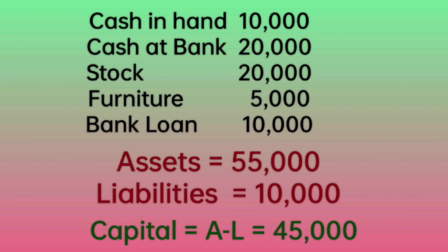Suppose, for example, the opening assets and liabilities of a firm are: cash in hand 10,000; cash at bank 20,000; stock of goods 20,000; furniture 5,000; and bank loan 10,000. The total assets are cash plus bank plus stock plus furniture — that is 10,000 plus 20,000 plus 20,000 plus 5,000 — total assets come to 55,000. The total liabilities equal bank loan, that is 10,000. Therefore, capital equals assets minus liabilities: 55,000 minus 10,000, that is 45,000.